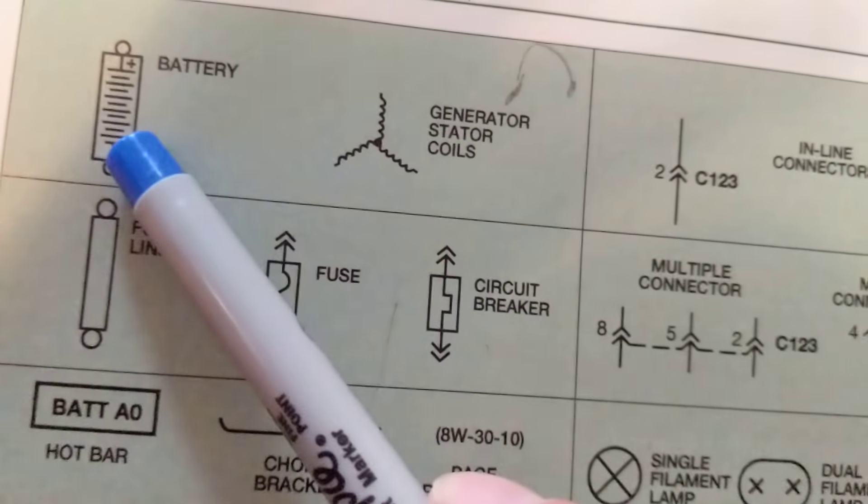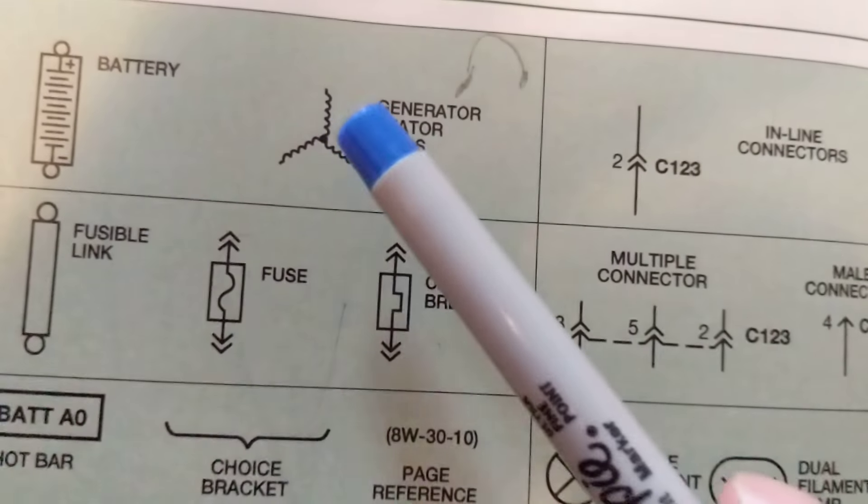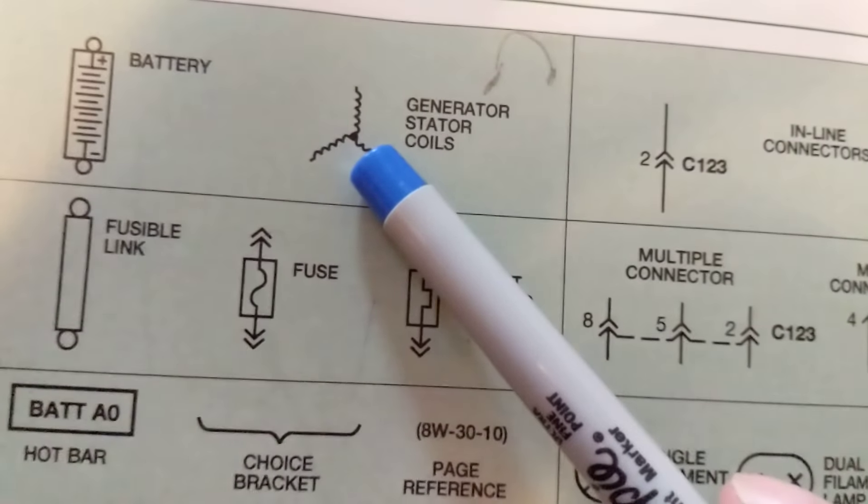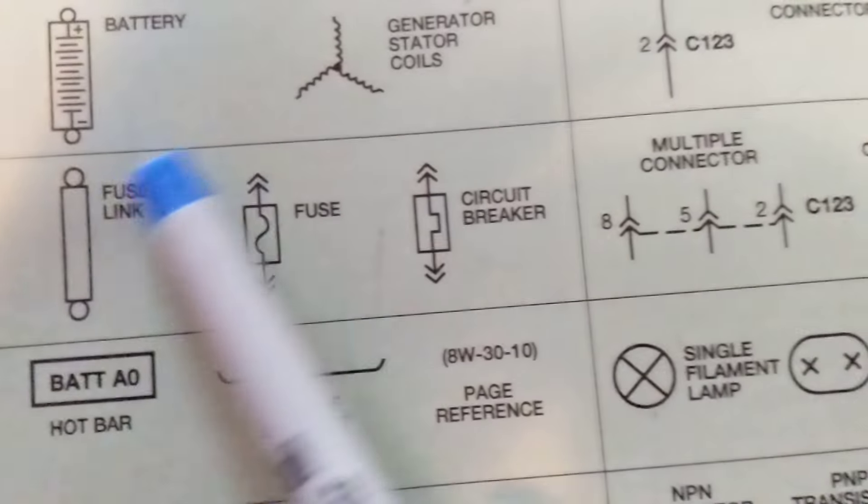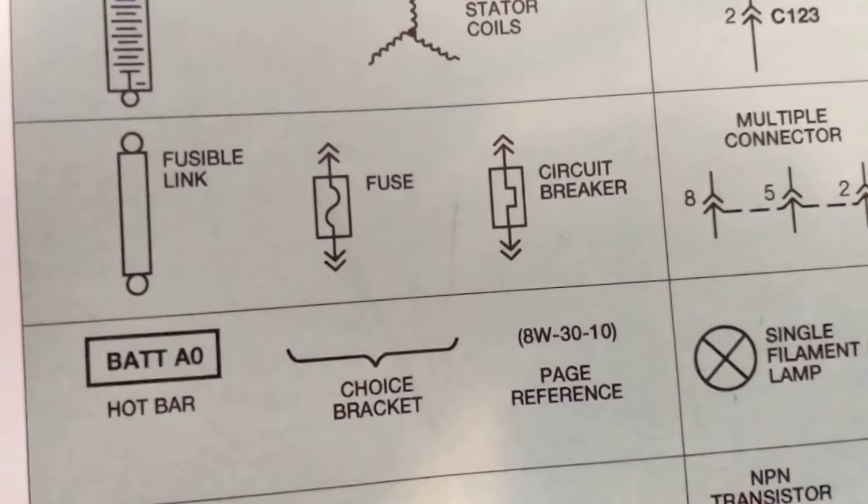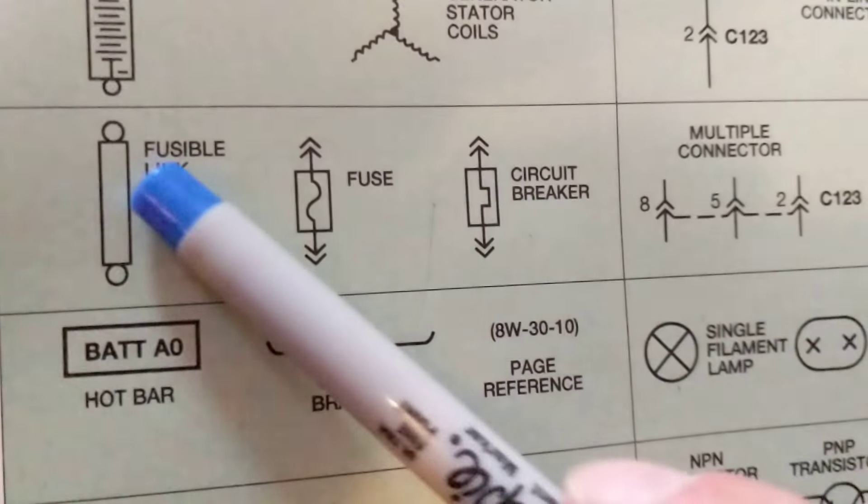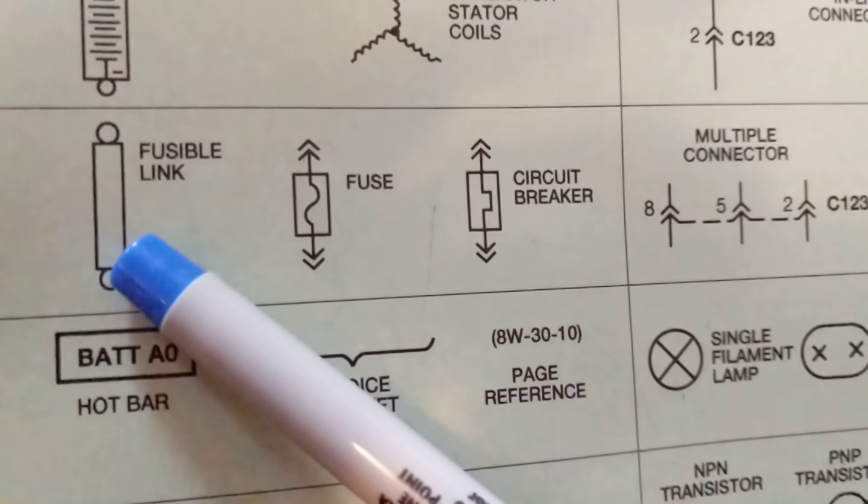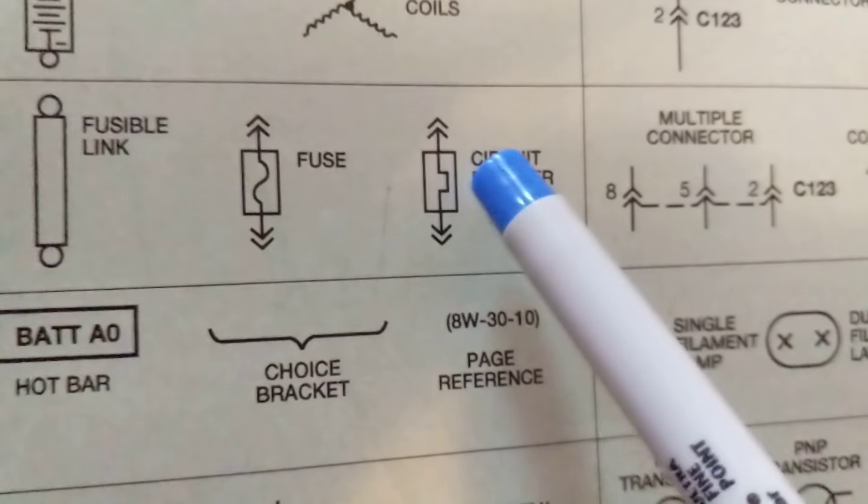It's a battery, a source. This is a generator, this is another type of source but an AC source. As you know, a protection is needed in any circuit. This is a fusible link which we use quite often in automotive, also protection. This is a fuse, a symbol for a fuse.